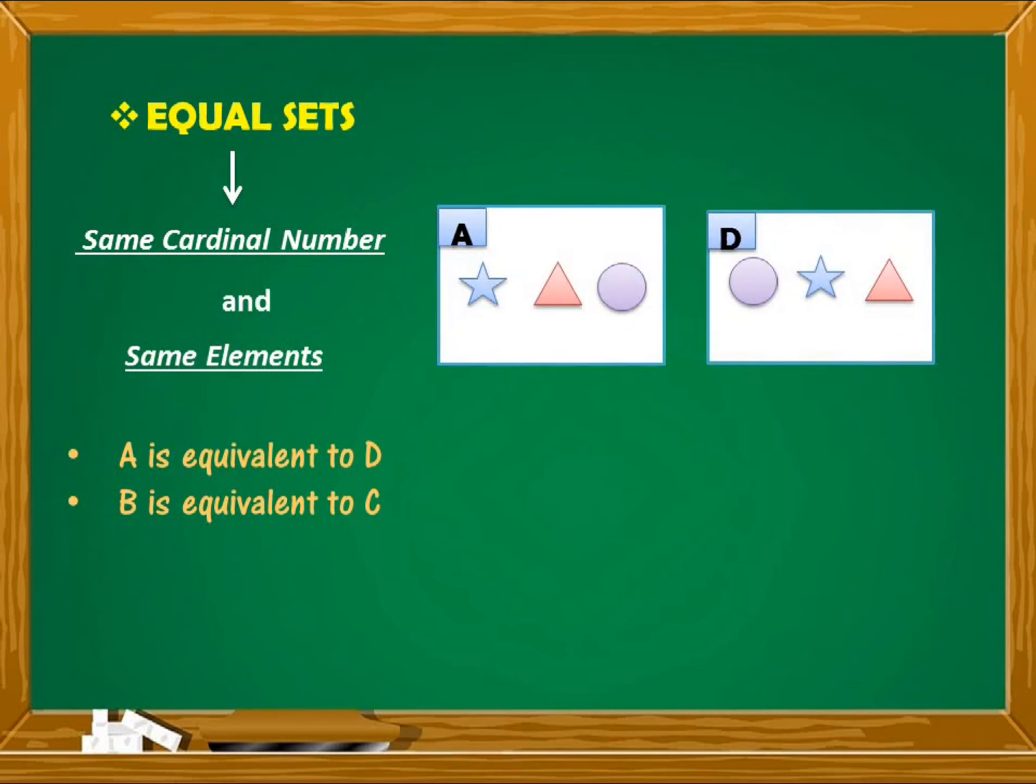A and D are equivalent. Regardless of the order, we can see that the elements of set A are just the same with set D. Parehong-pareho yung mga elements: star, triangle, and circle. We can say that these two sets are equal. Set A is equal to set D.